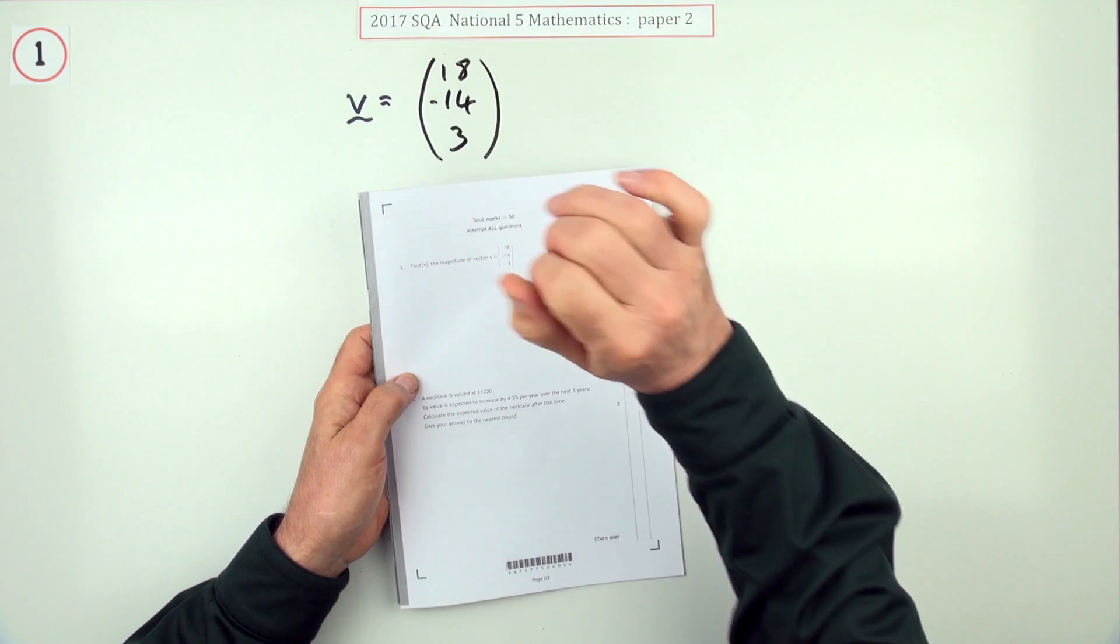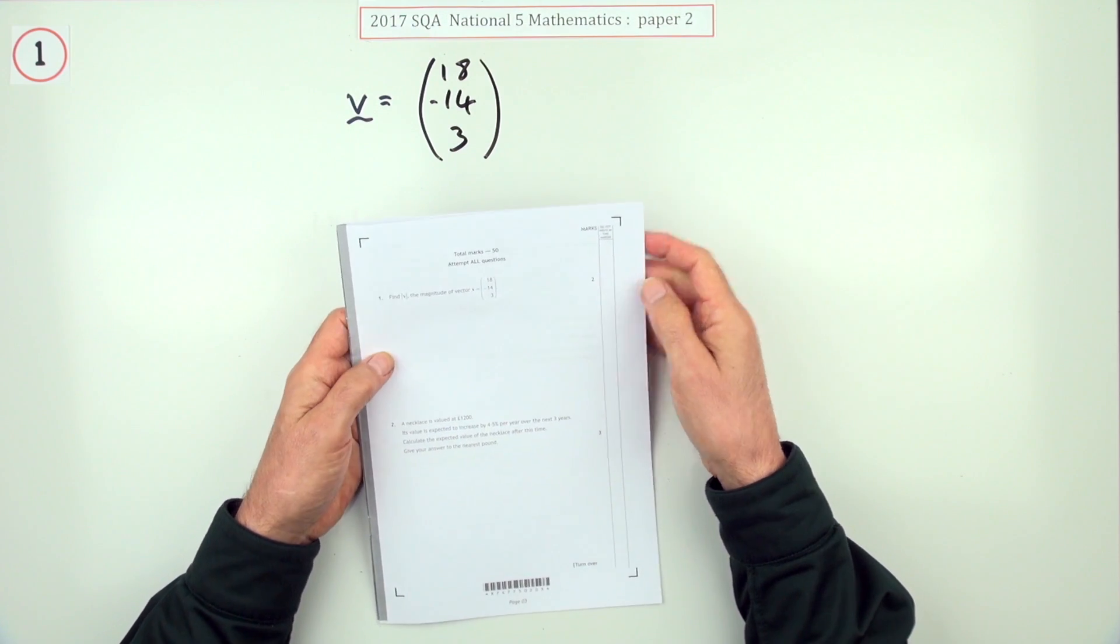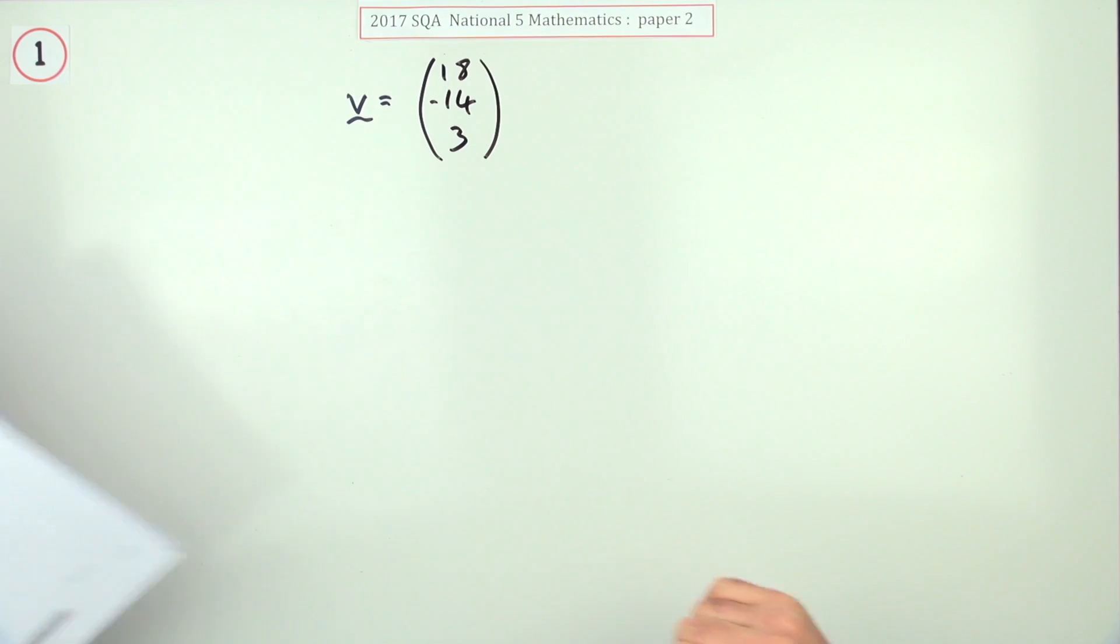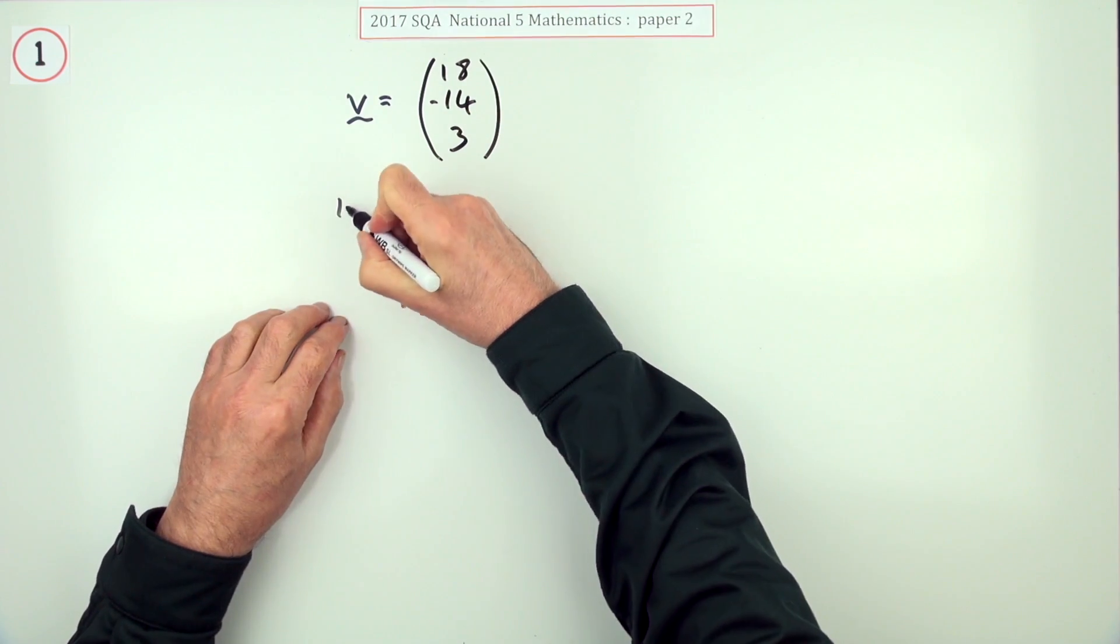Number one then, from paper two of the 2017 National 5. Here we go, just for two marks though. A vector - you've got a vector in component form, what's its magnitude? Well, you know how to work out the magnitude.